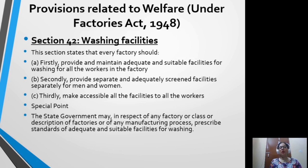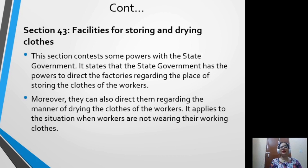Section 43 covers facilities for storing and drying clothes. The state government has the power to direct factories regarding the place of storing the clothes of workers and the manner of drying the clothes of workers. This applies to the situation when workers are not wearing their working clothes. The state government plays a major role in this provision and can direct any factory for providing this provision of storing and drying clothes.